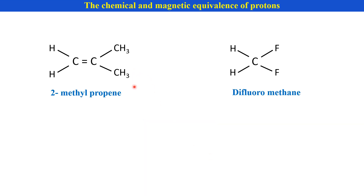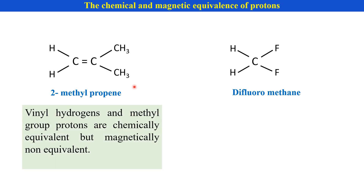Another example is 2-methylpropene. In that case also, these two vinyl protons or vinyl hydrogens are chemically equivalent but magnetically non-equivalent.